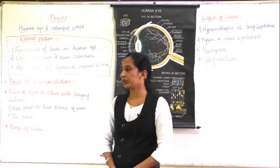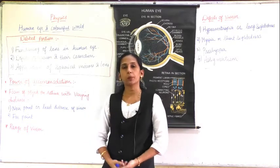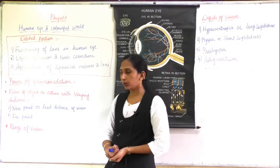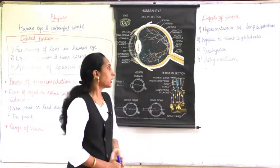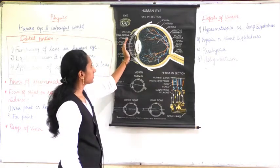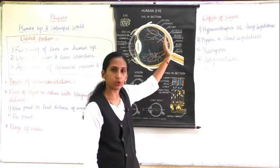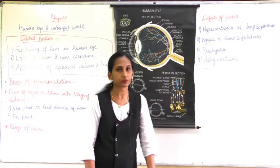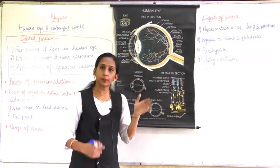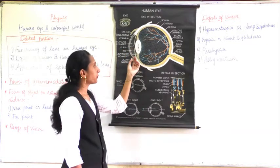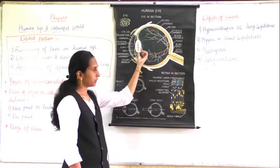Today we are going to study different concepts related to our vision. First is the power of accommodation. When light falls on our eye and enters through the lens, the ciliary muscles adjust the focal length of the lens.